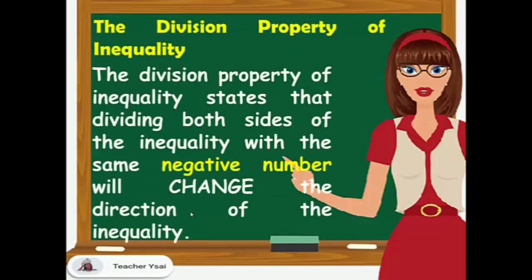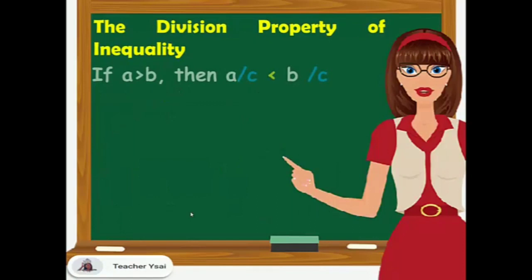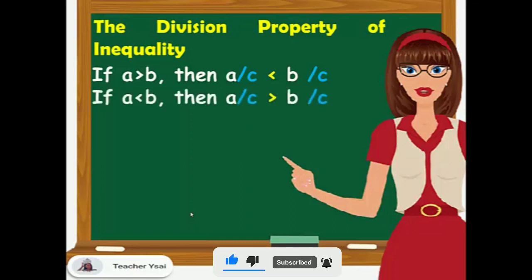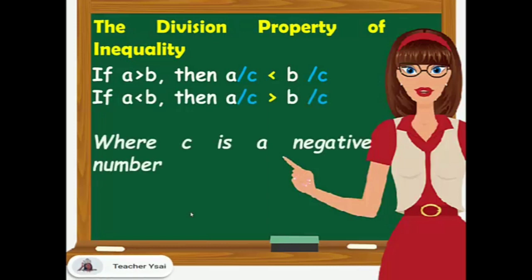The division property of inequality also states that dividing both sides of the inequality with the same negative number will change the direction of the inequality. If A is greater than B, then A divided by C is lesser than B divided by C. And if A is lesser than B, then A over C is greater than B over C, where C is a negative number.